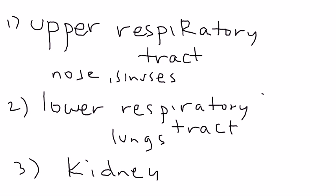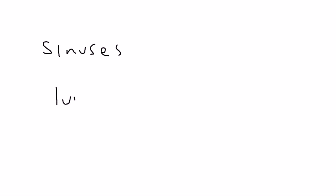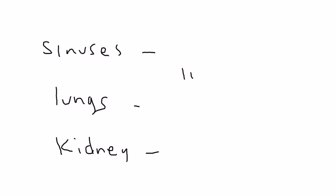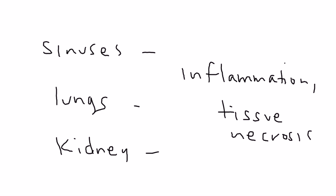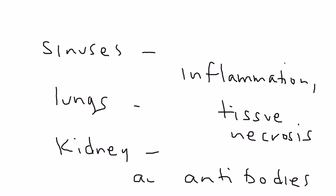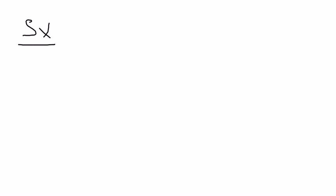What's actually happening in Wegener's to the sinuses, lungs, and kidneys? There is inflammation and tissue necrosis occurring because of the autoantibody ANCA, which is responsible for all this havoc — the inflammation and destruction of your own tissue in various parts of the body.